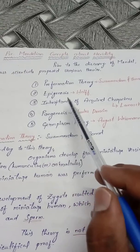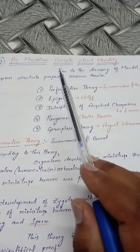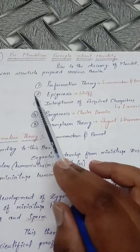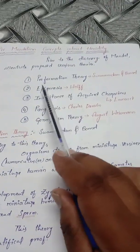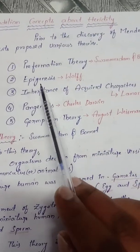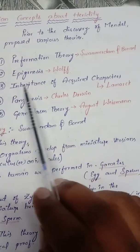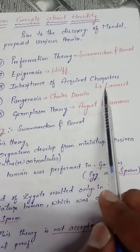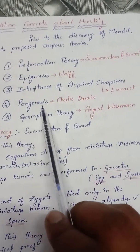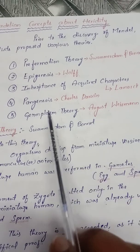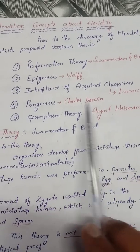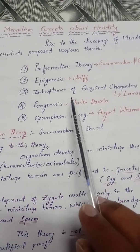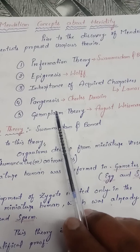All these theories were given by different scientists before Mendel's experiment. The five important theories are: preformation theory given by Swammerdam and Bennett; epigenesis or theory of epigenesis given by Wolf; inheritance of acquired characters given by Lamarck; pangenesis or theory of pangenesis given by Charles Darwin; and germplasm theory given by August Weismann.